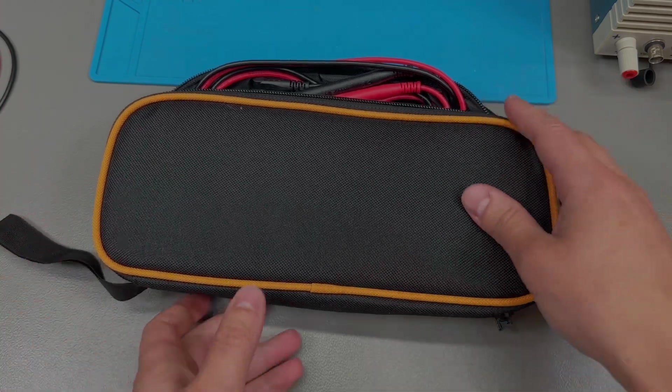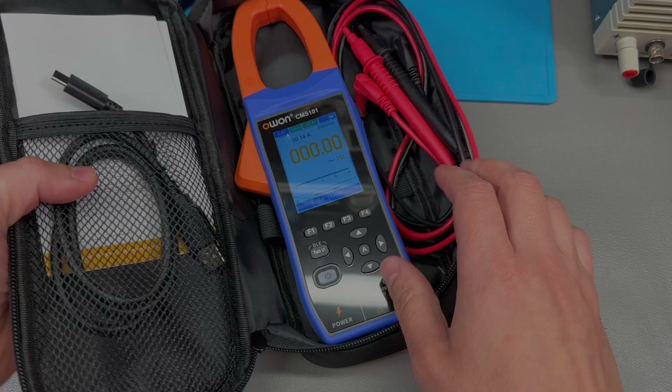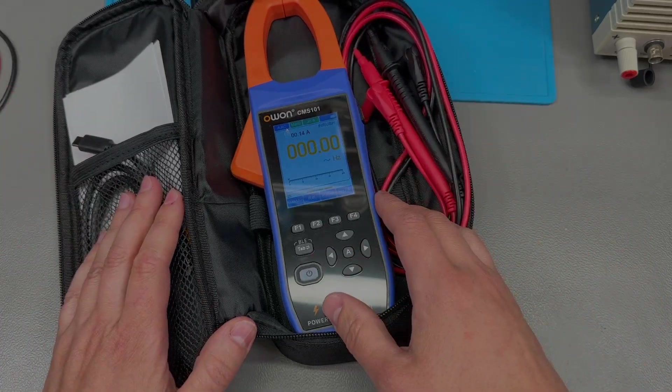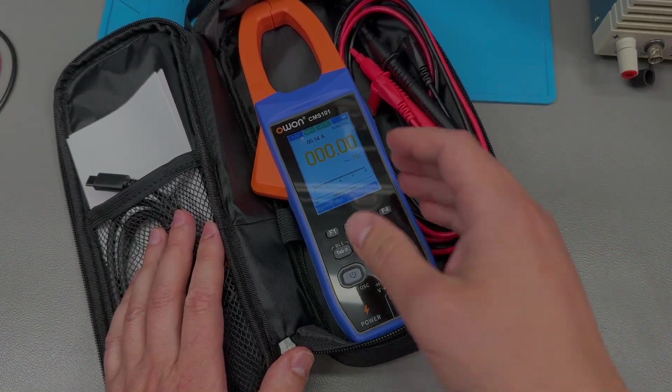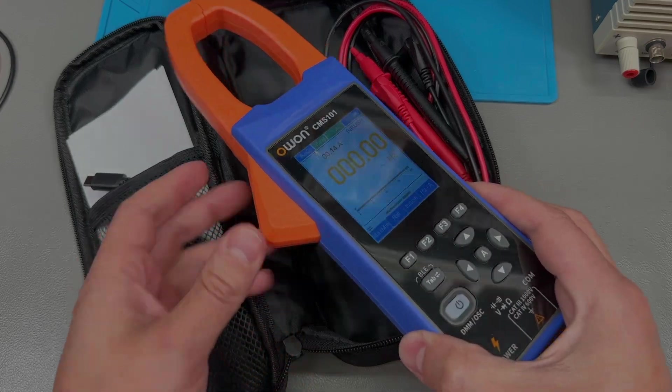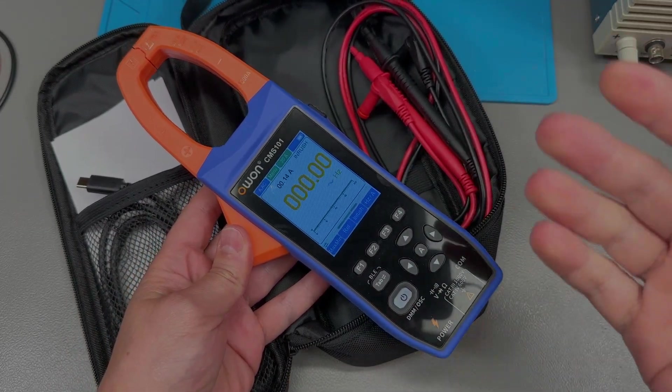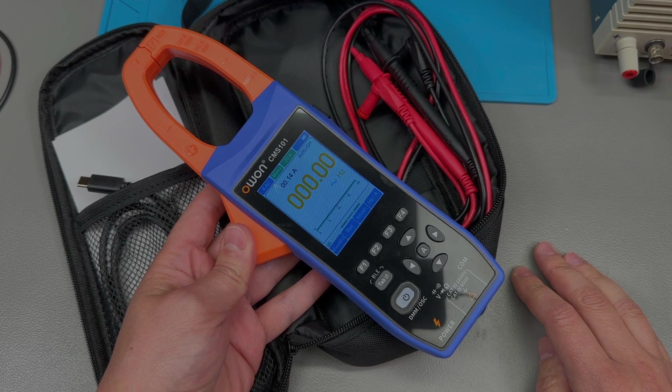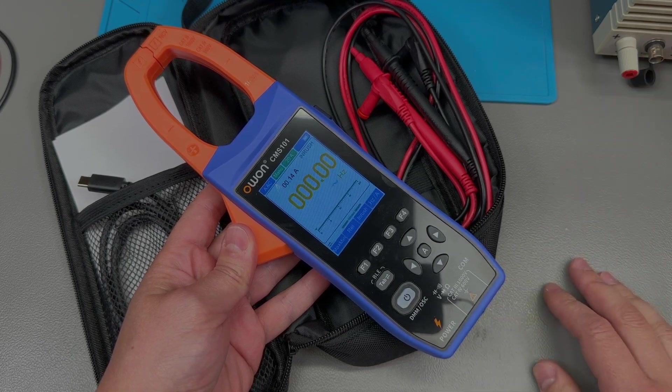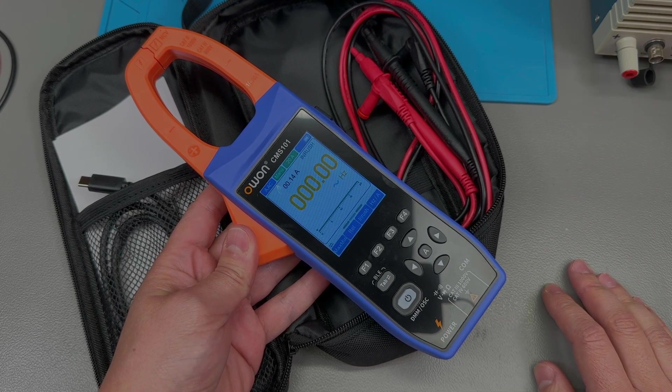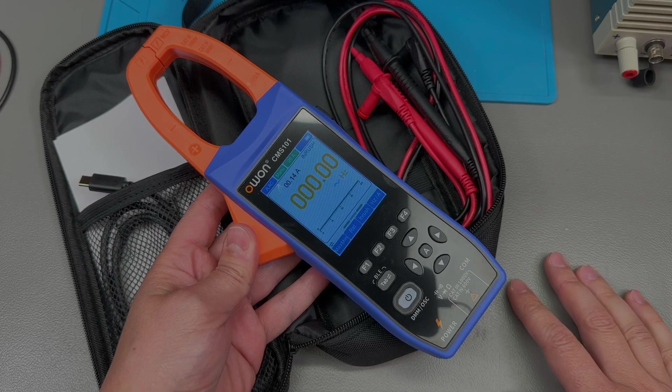Today we're taking a closer look at the Owon CMS101, which is a more modern type clamp meter from Owon. They sent this in for the purpose of the review, but no payment has been received and they don't get to control any of the things that they say in this video. But that has been my policy right from the start of the YouTube channel.